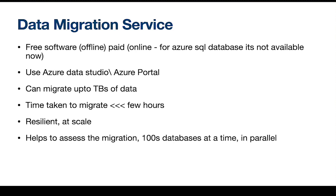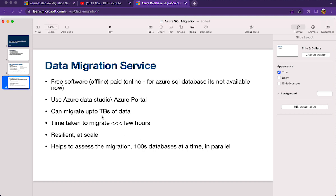DMS is recommended when the migration involves large databases or large numbers of databases, and when downtime cannot be allowed. The website claims near-zero downtime for DMS, whereas DMA requires downtime. DMS is also more resilient and works at scale, scaling itself based on load. It can lift and shift hundreds of databases in parallel simultaneously, compared to eight databases at a time with DMA. These are the primary tools covered in Microsoft's documentation.